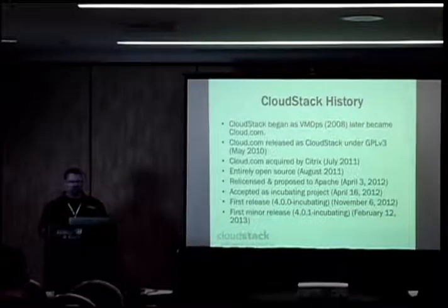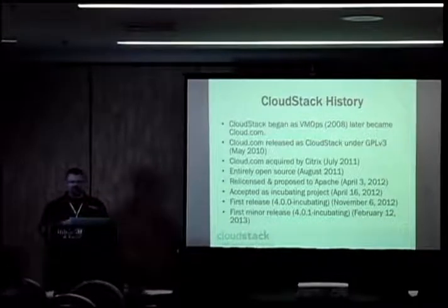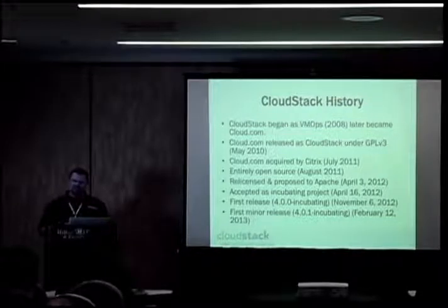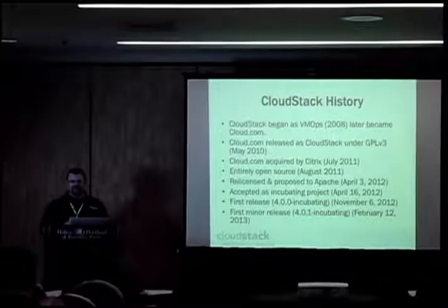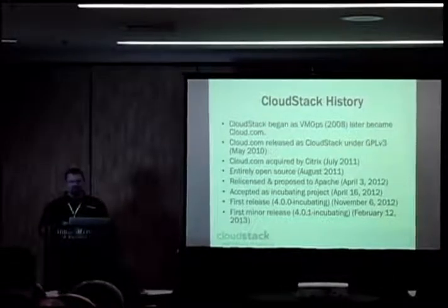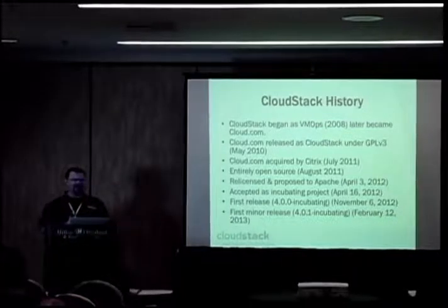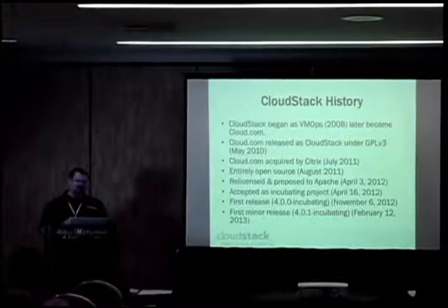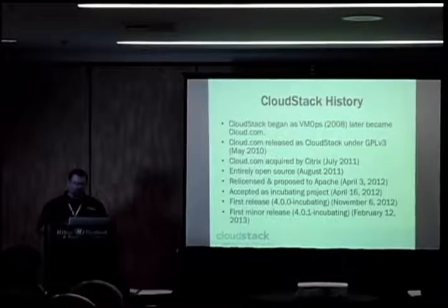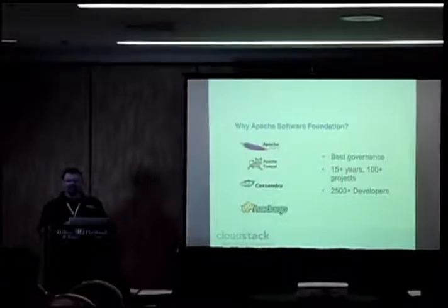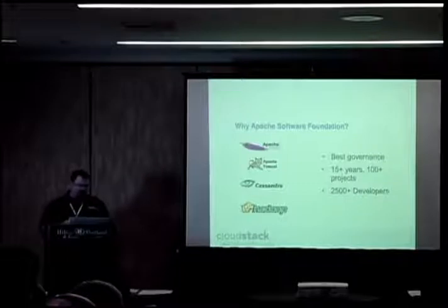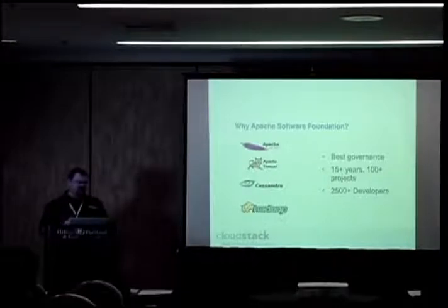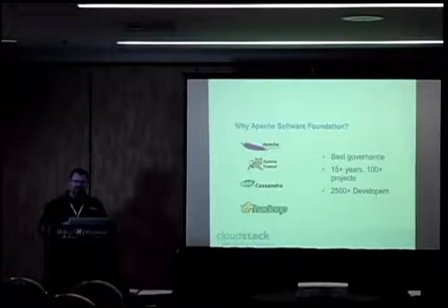CloudStack was accepted into Apache on April 16th. It took the summer to set up infrastructure — the Git repository, mailing lists, all that. The first release was in November, our first major release as an Apache incubating project, and the first minor release came out in February. Citrix chose Apache for its track record of governance and licensing. Community members told us that going to Apache meant better licensing and well-understood governance compared to creating your own foundation.